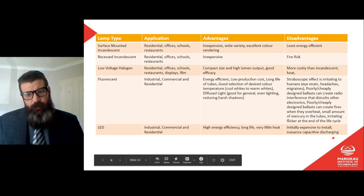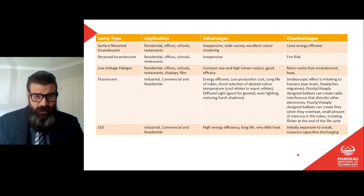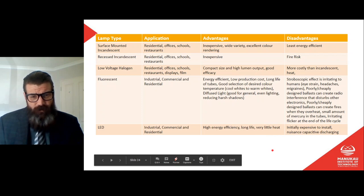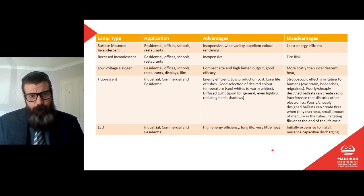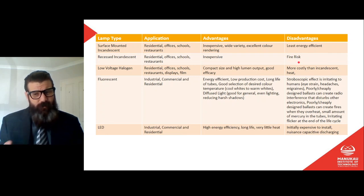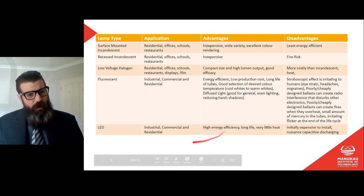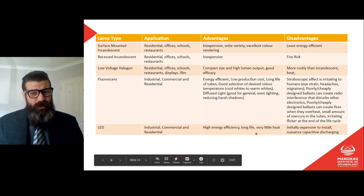We have a list here of lamp types, their applications, advantages, and disadvantages — no doubt this will come up in the test, so it's worth reading and maybe bookmarking. Some highlights: a recessed incandescent — a normal incandescent in a downlight — has a fire risk because they're the hottest type of light when mounted in the ceiling. The advantages of LED are well known: high energy efficiency, long life, very little heat, and in most cases they will replace all these other types.